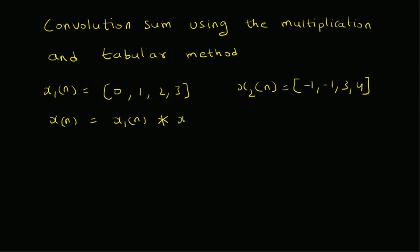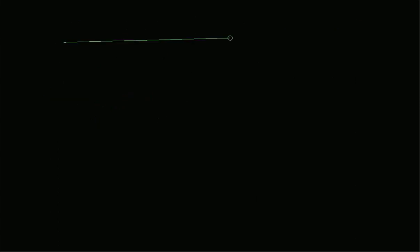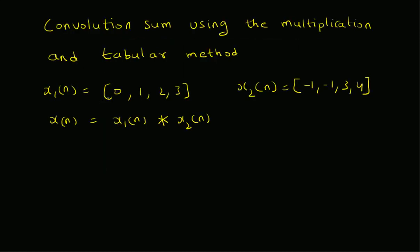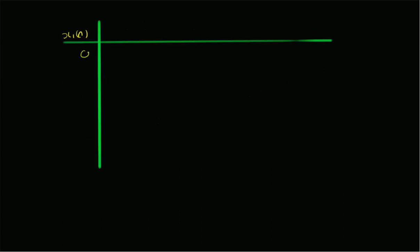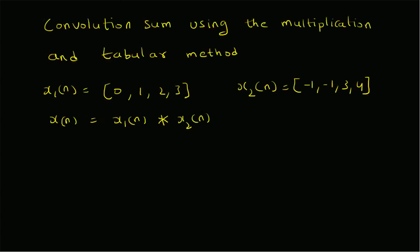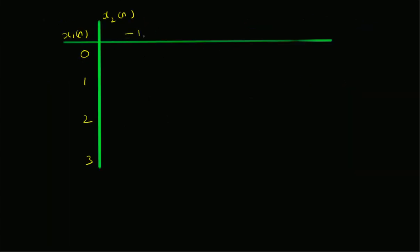For this purpose, we first build a table containing both signals and the products of corresponding elements. We write x1(n) along the rows — that is, {0, 1, 2, 3} — and x2(n) along the columns — that is, {-1, -1, 3, 4}.